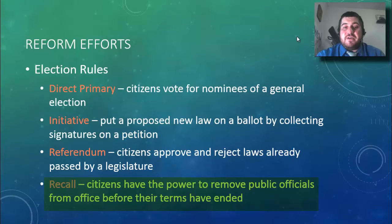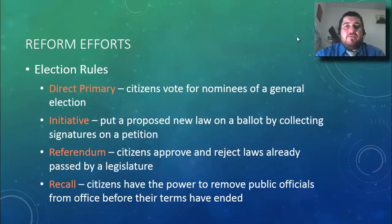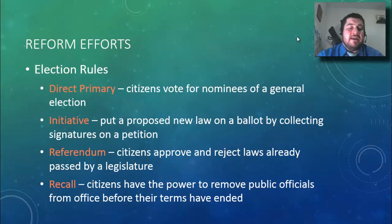Finally, the recall gives citizens the power to remove a public official from office before their term ends if they're doing a terrible job. You can't do that at the federal level, but you can at the state and local levels. These reforms all aimed to make government more democratic and more in the hands of the people. Next time we'll talk about women and African Americans and how their needs were met during this era.